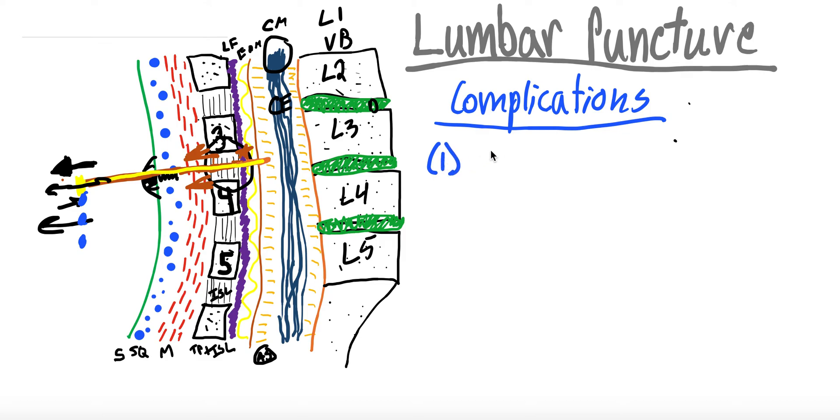So the biggest one, I shouldn't say the biggest one, the one that is talked about the most, and it's one that we kind of already spoke on when talking about contraindications, is herniation. So like an uncal herniation, because we're decreasing the pressure gradient. Again, I don't think the literature really bears this out that strongly, but it is a very tested upon common thing that is spoken about.